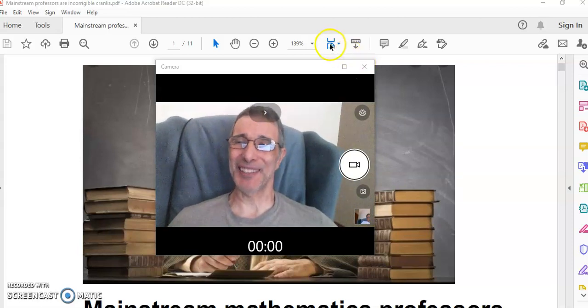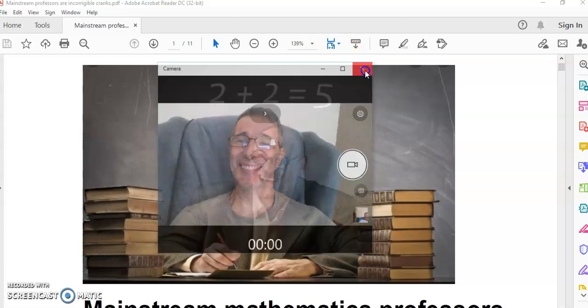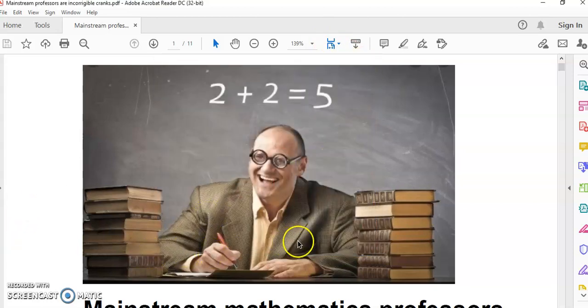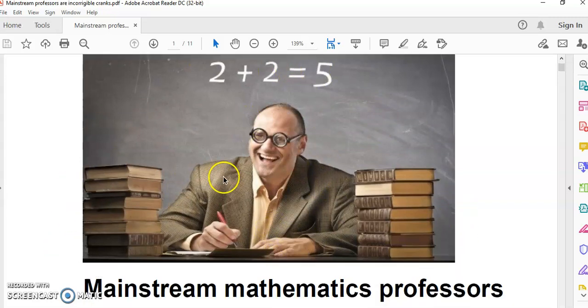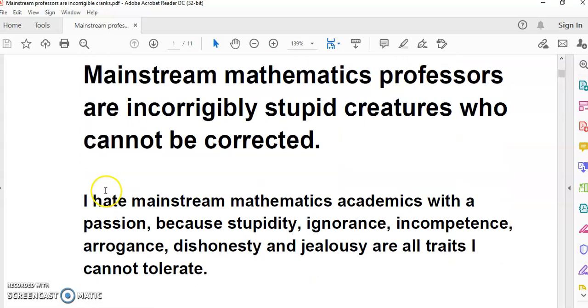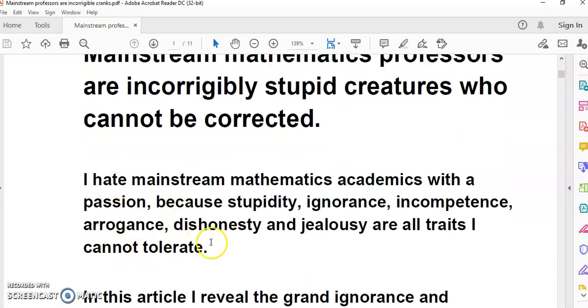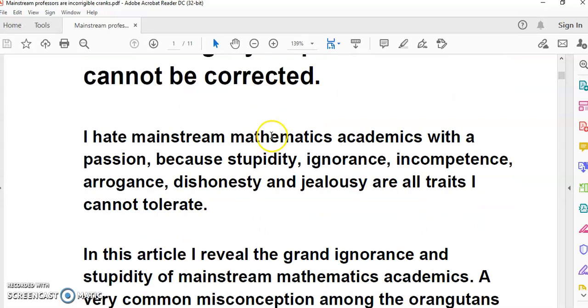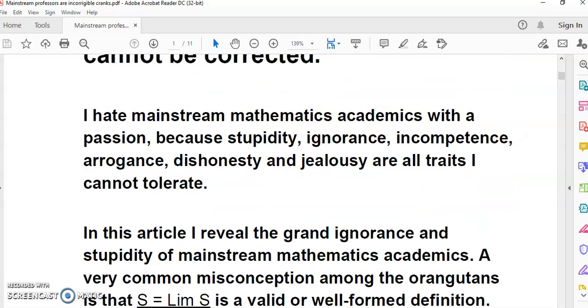Without further ado, let's begin. When you see that little happy academic there with 2+2=5 in the background, we're not going to focus on that. We're also not going to focus on my hatred for the attributes of mainstream mathematics academics. I don't hate them as people - I hate what they are and what they do. They're incorrigibly stupid, ignorant, incompetent, arrogant, dishonest, and jealous. These are all traits I cannot tolerate.